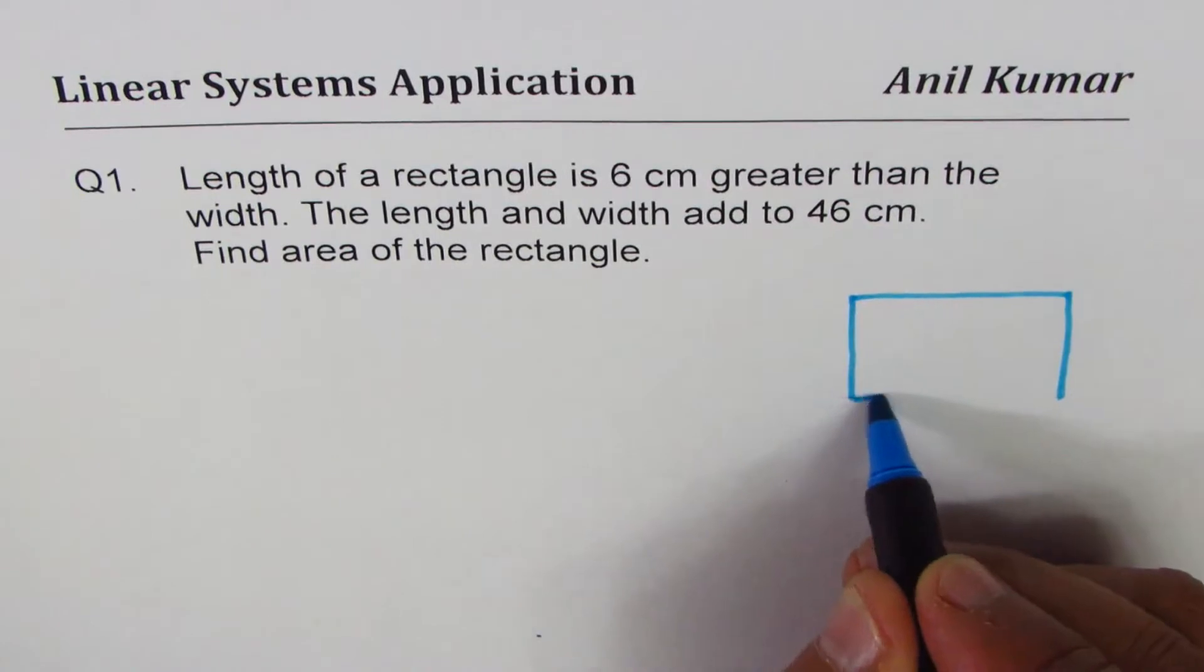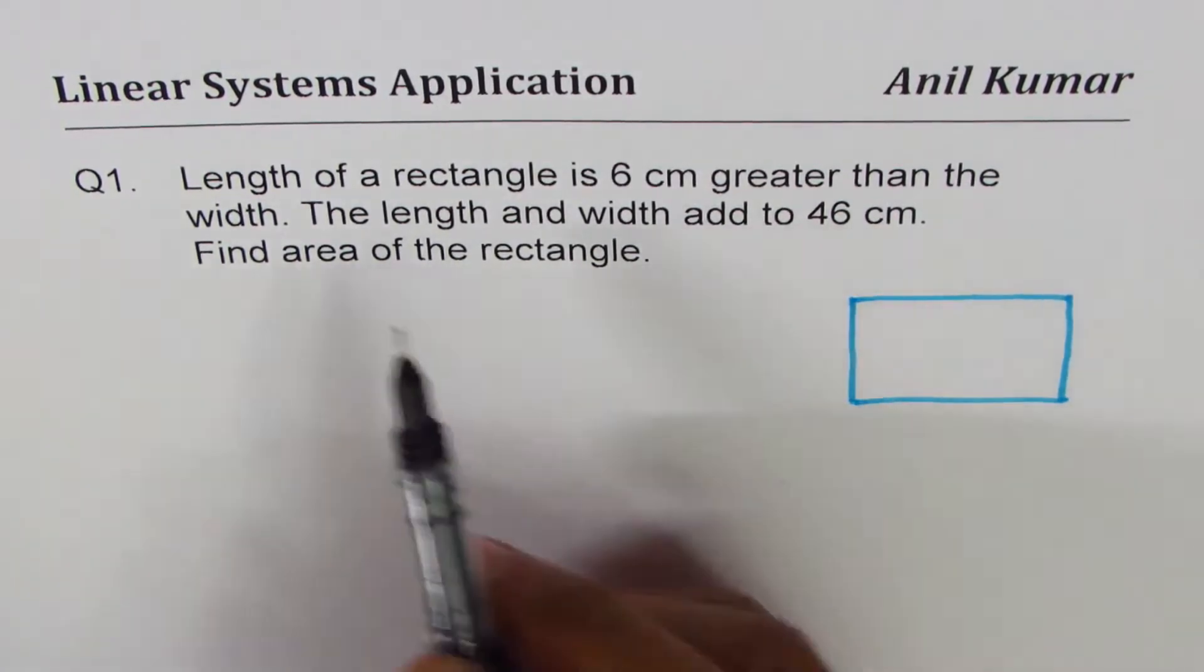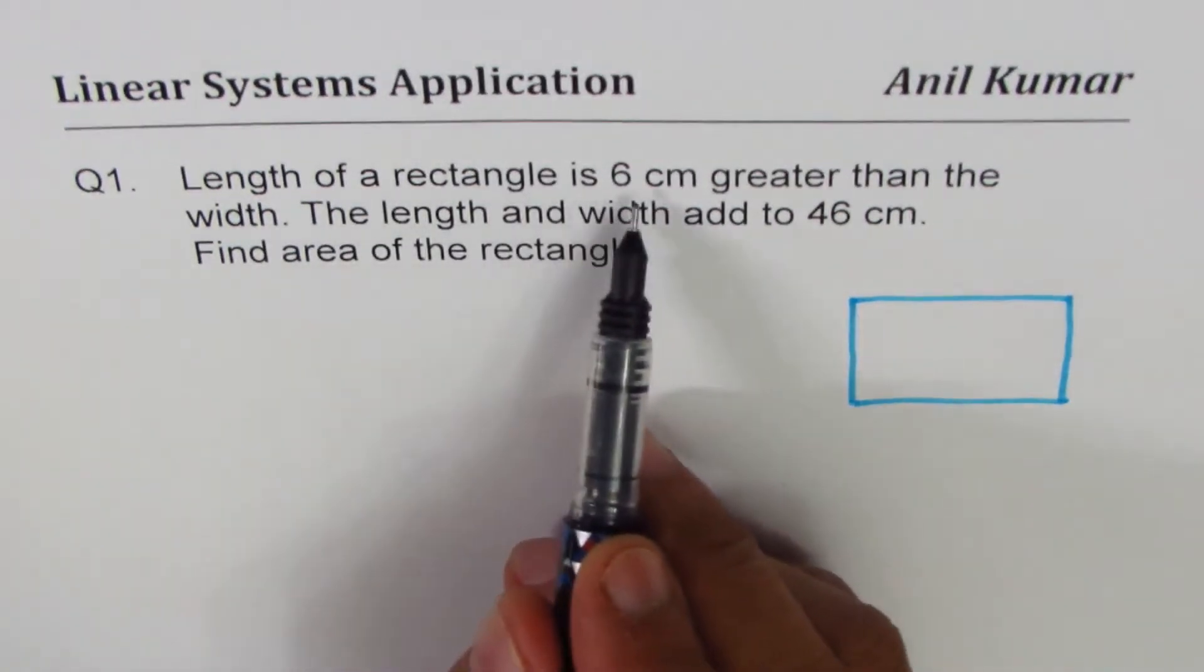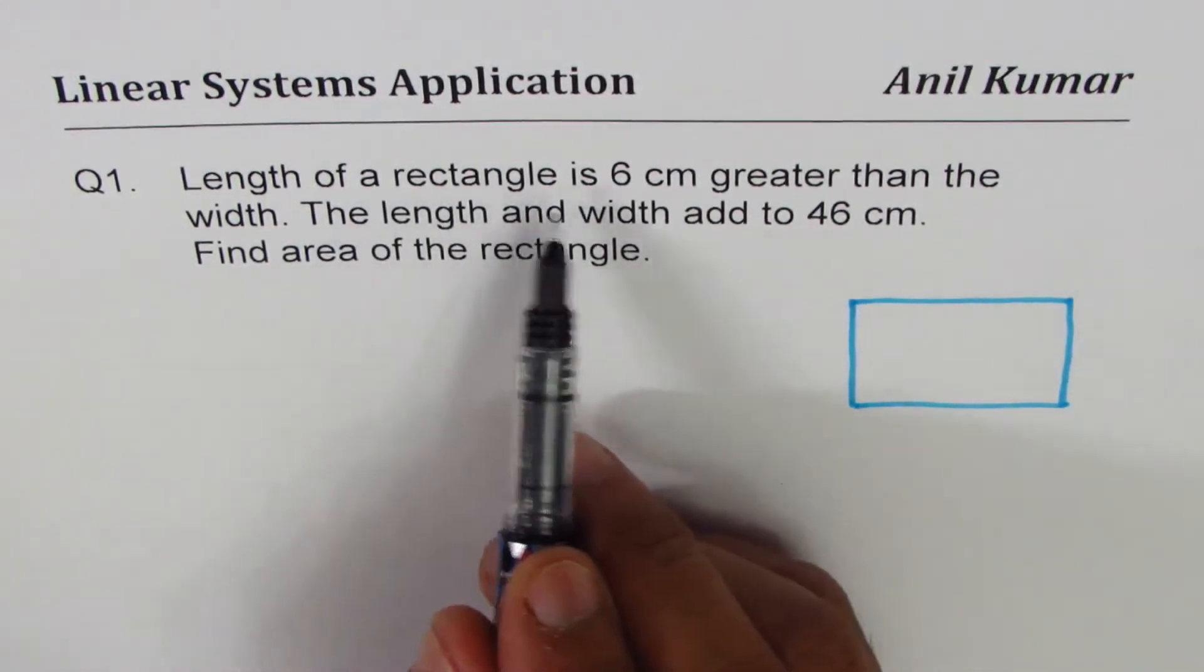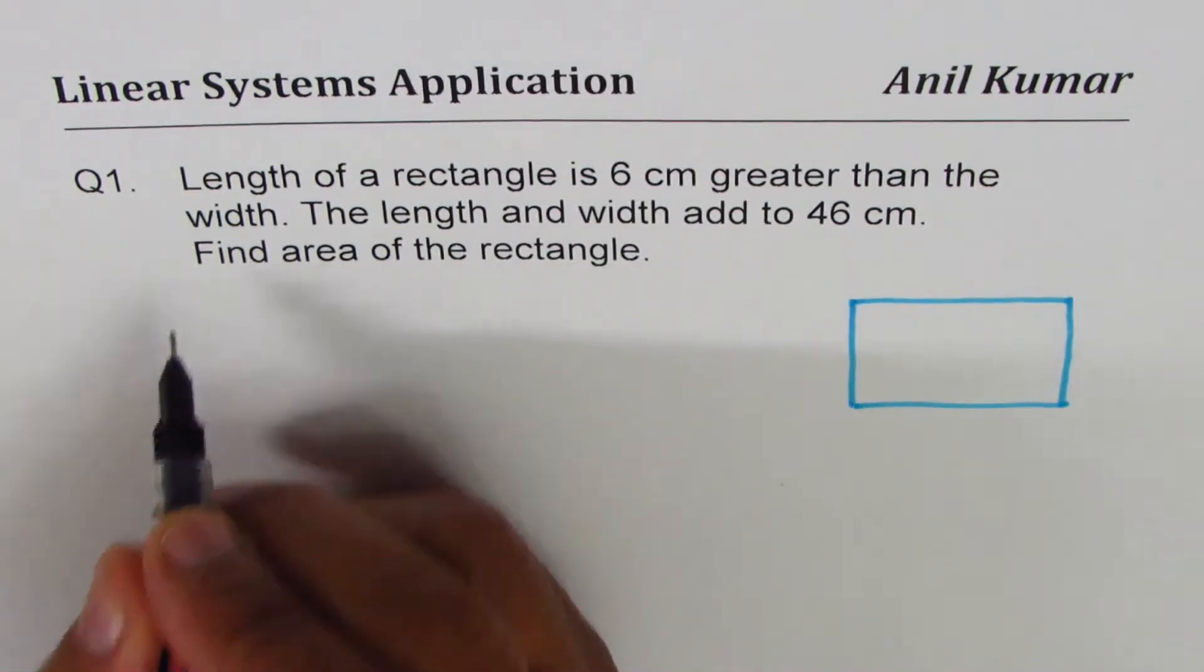Always begin with sketching a diagram. Sometimes it may be very difficult and you can avoid it, but most of the time it is simple so you should always sketch. Length of the rectangle is 6 cm greater than width, so we're talking about two things: length and width.